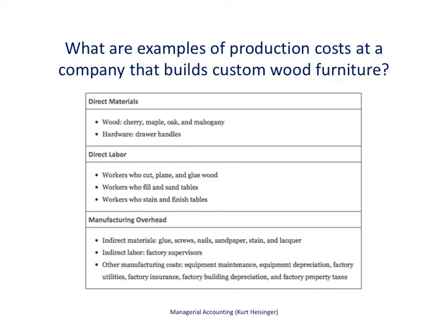Now let us look at examples of manufacturing costs for a company that builds custom wood furniture. For direct materials, the wood — such as cherry wood or maple oak — would be tracked to the tables being built. High-end drawer handles would also be considered direct materials. For direct labor, workers who cut, plane, and glue the wood together, workers who fill and sand the tables, and workers finishing the tables would all be considered direct labor.